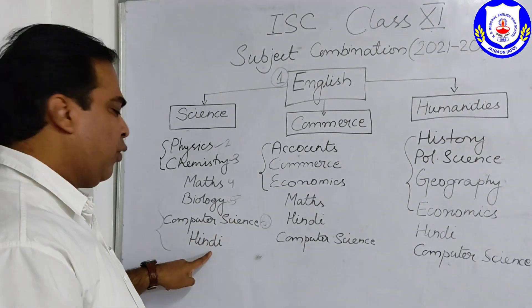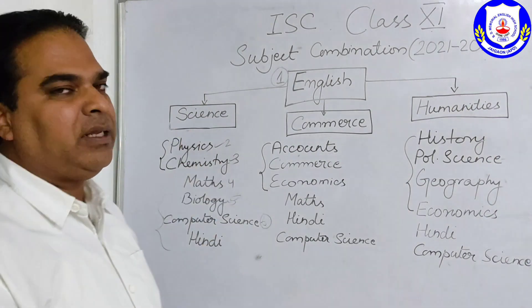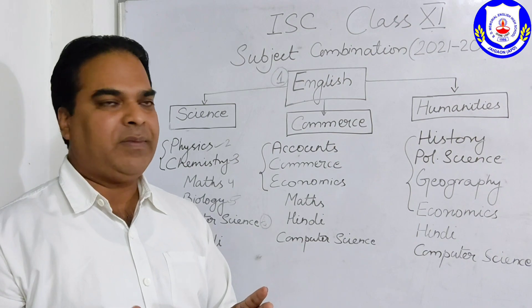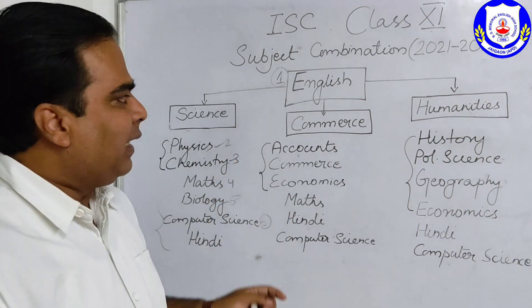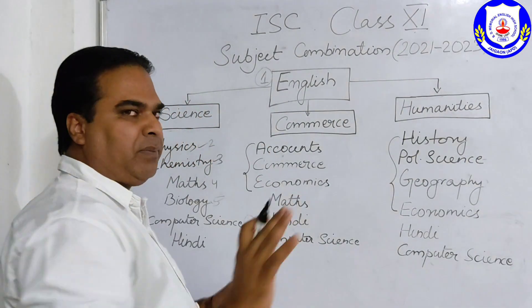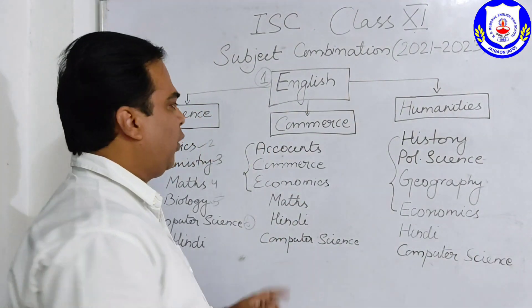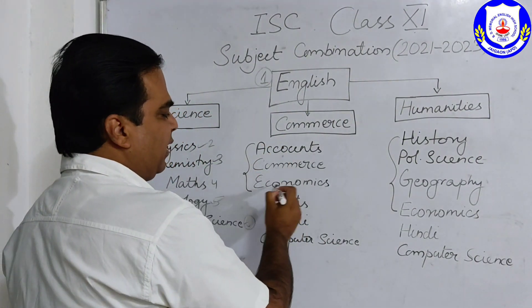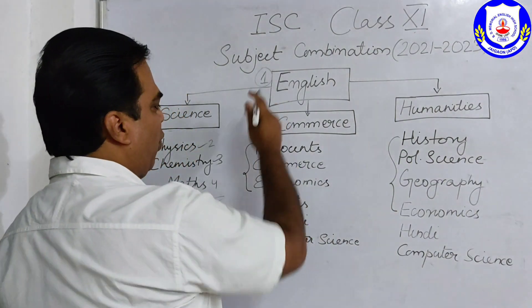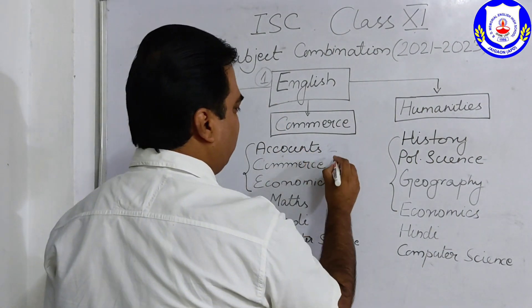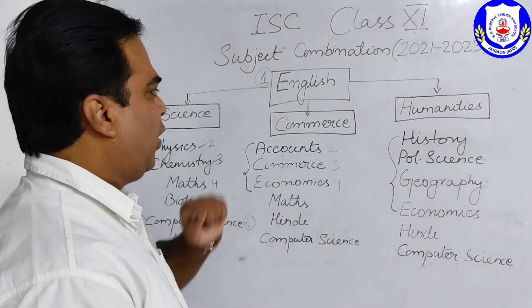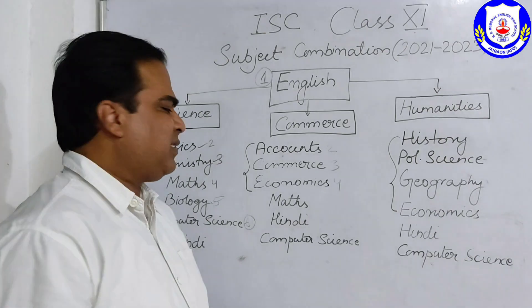You can also go for Hindi as an option. Including English, you can choose either five or six subjects. That covers the Science stream. Now focusing on the Commerce stream: English is compulsory, and Accounts, Commerce, and Economics are must — these are the important subjects in Commerce. So that is already four subjects chosen.